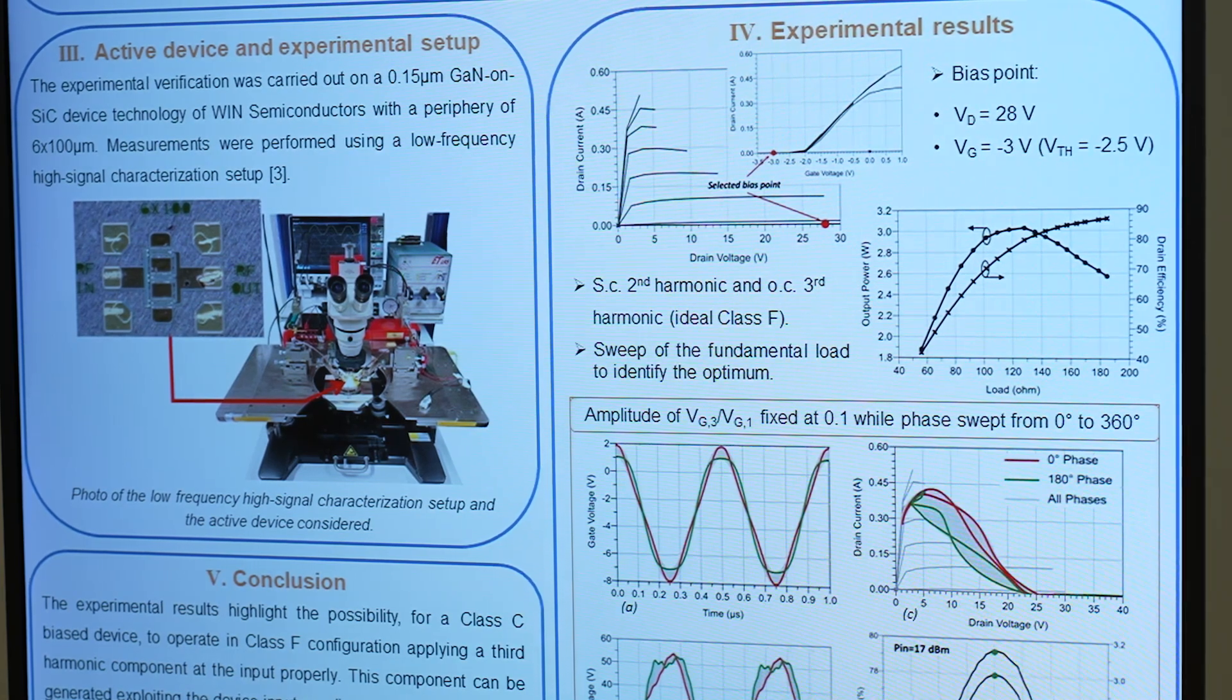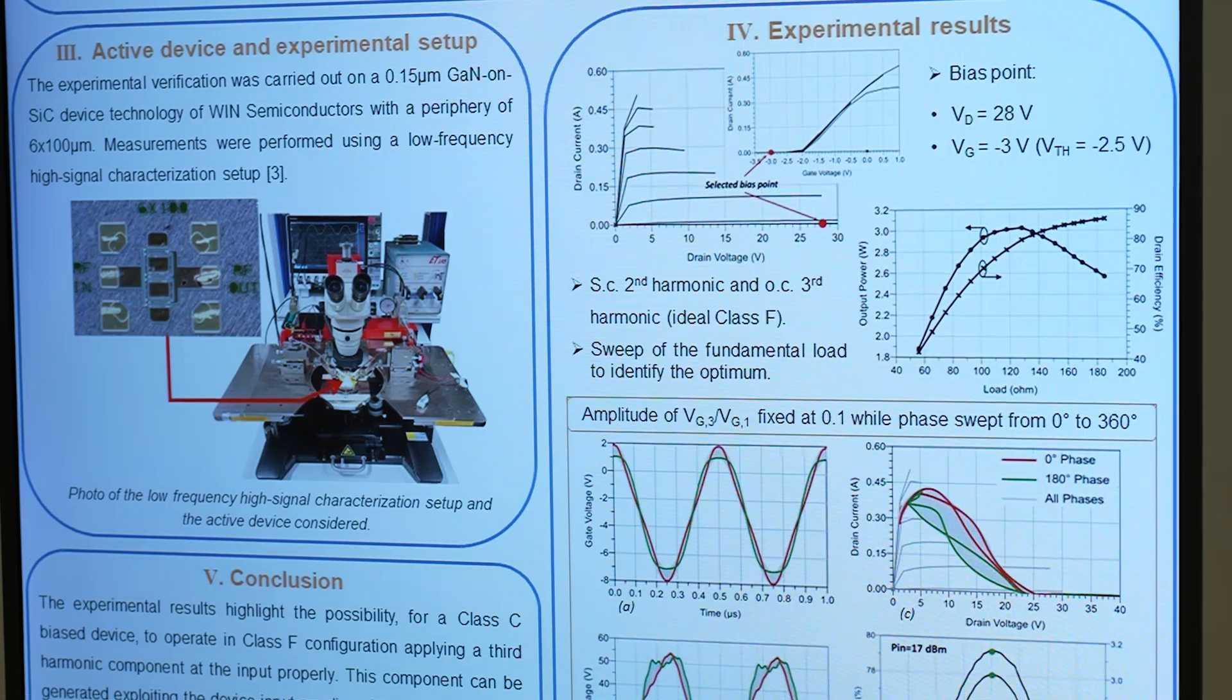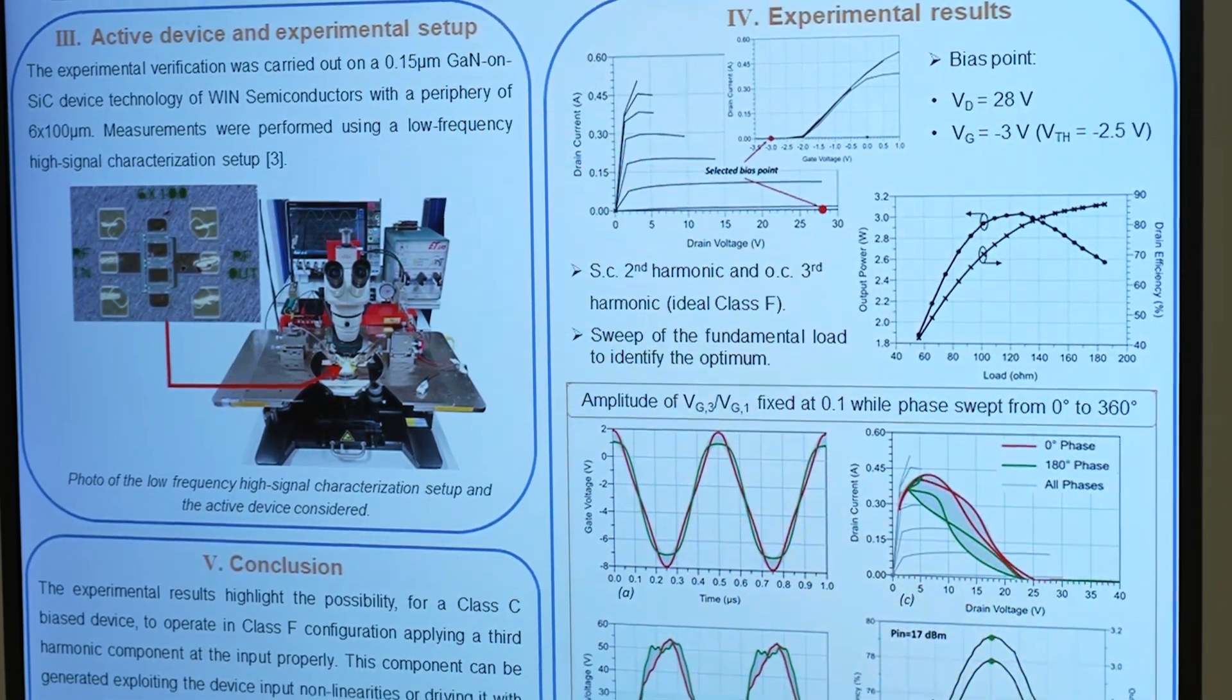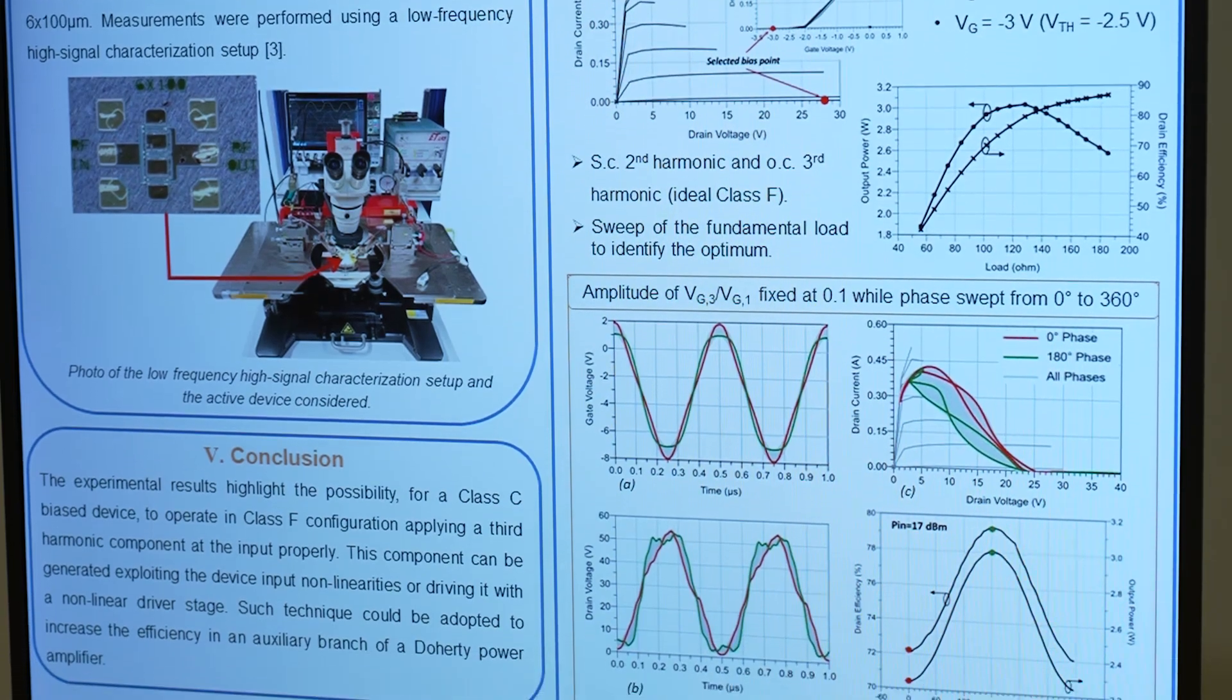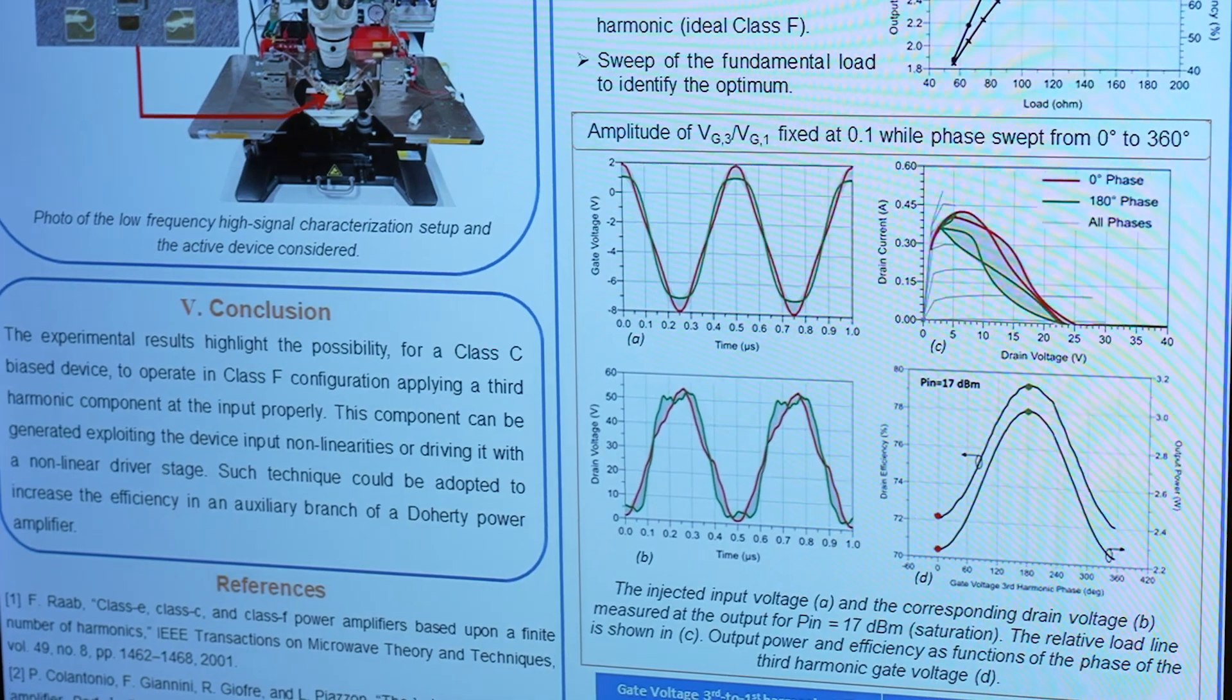The output loading conditions are as close as possible to the Class F ideal loads, so a short circuit for the second harmonic and an open circuit for the third harmonic, while the fundamental load is swept in order to find the optimum.